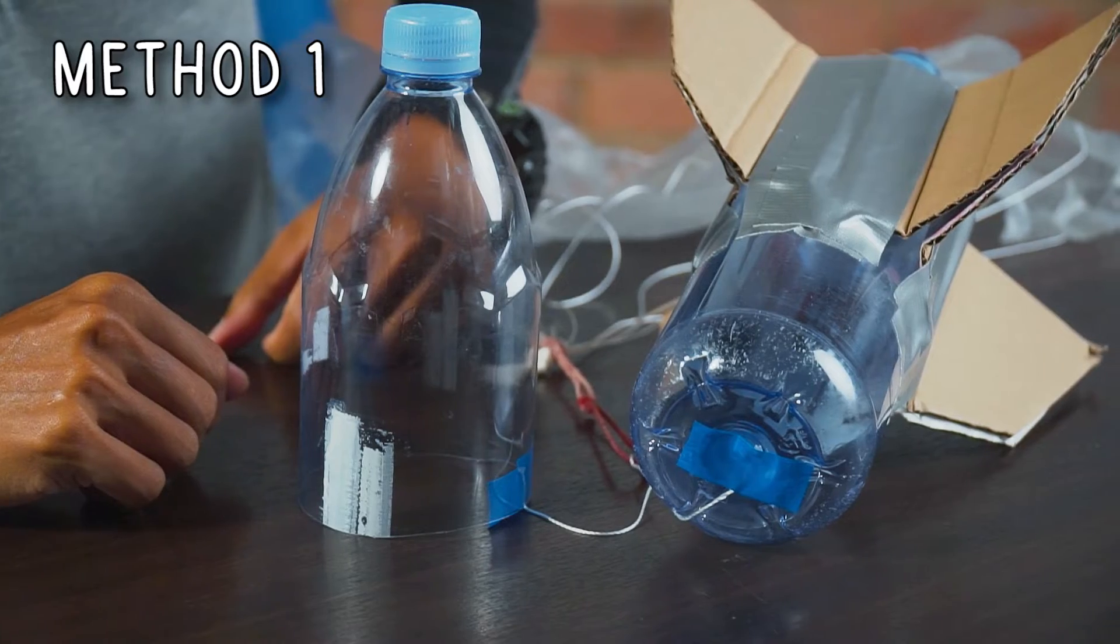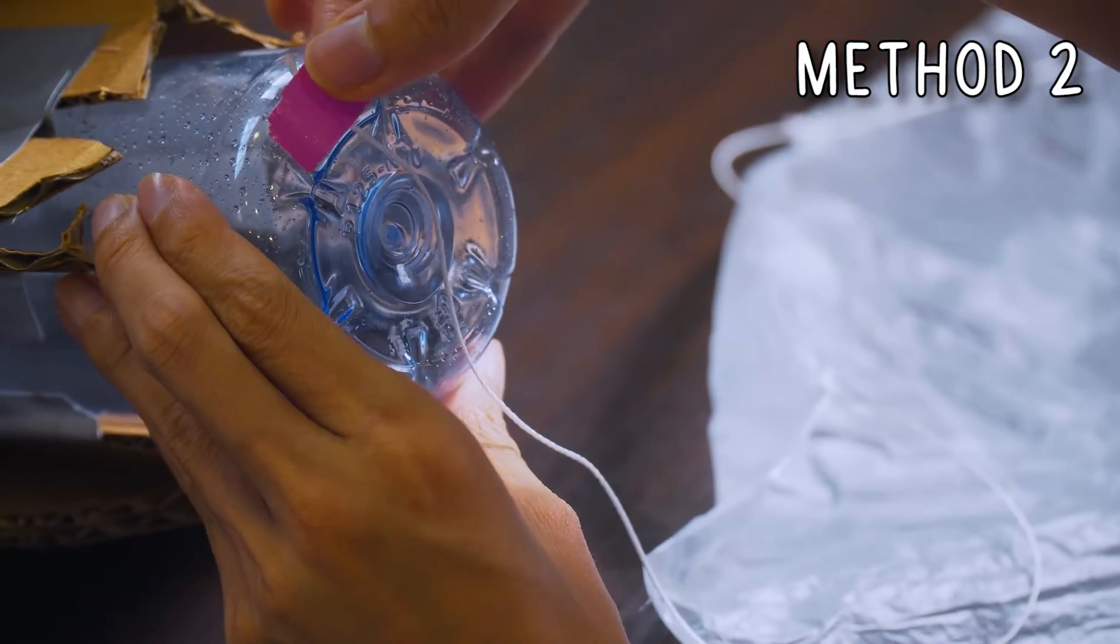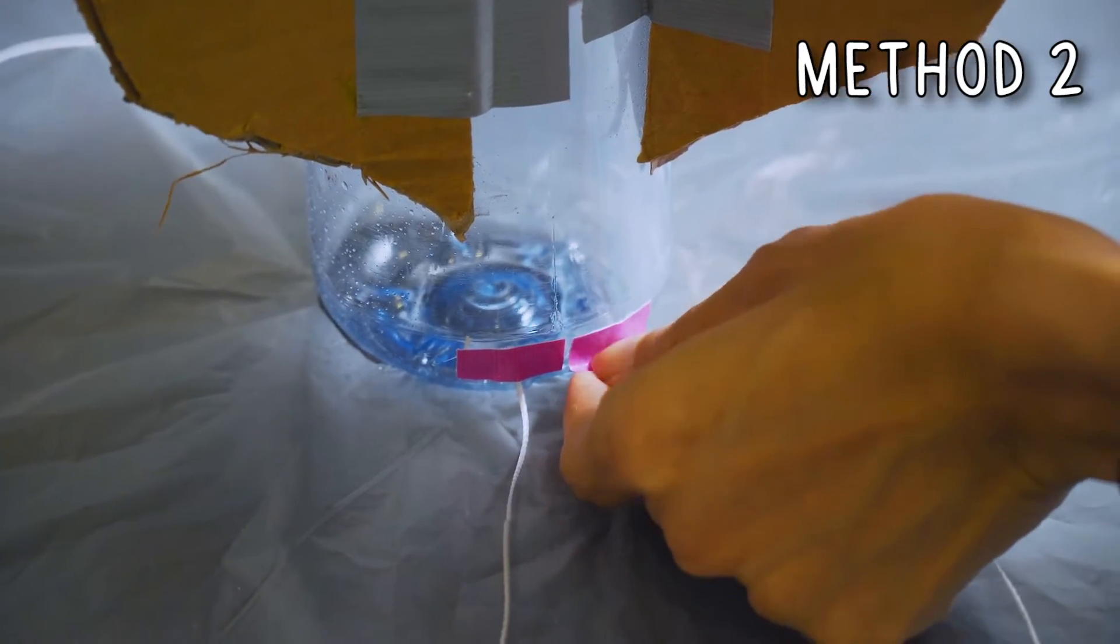The other way is less secure but simpler and could help the parachute release more easily. Simply, tape the other end of each string to the base of your water rocket.